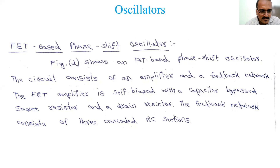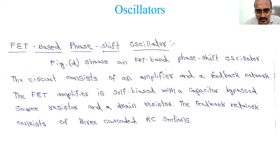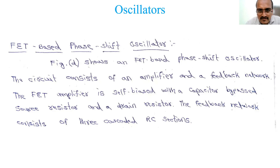Good morning. Welcome to the session. In the previous session we discussed oscillator circuits — the basic principle of oscillation, the Barkhausen criterion: the loop gain should be unity and the angle of A times beta should equal zero or 360 degrees. Based on that, we covered the first category: the RC phase shift oscillator, which uses an amplifier circuit with an RC frequency selective network — three cascaded sections of resistor and capacitor.